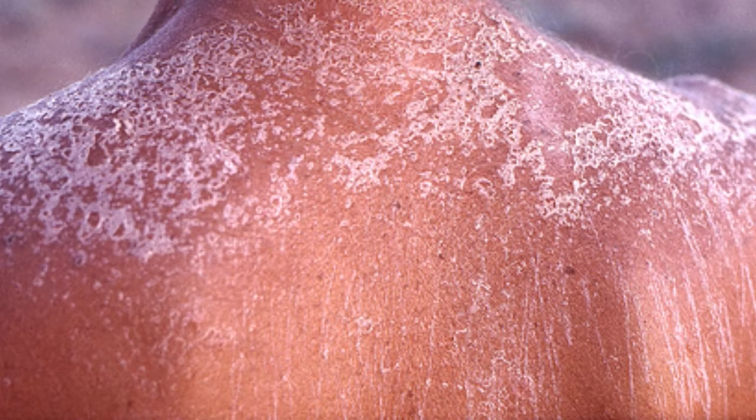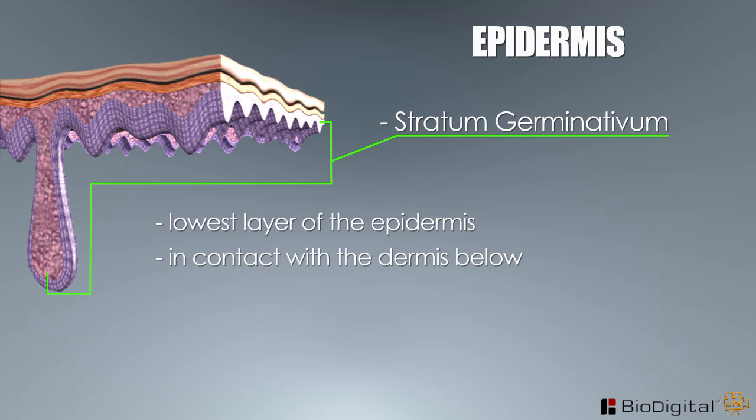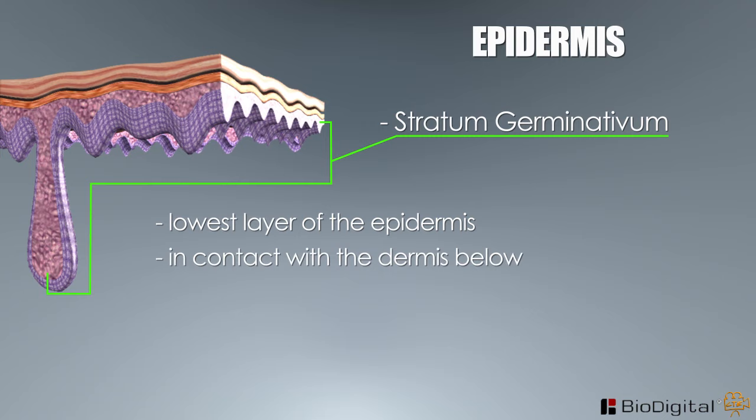Stratum germinativum. The stratum germinativum is the lowest layer of the epidermis and is in contact with the dermis below. It is the layer in which cell division called mitosis takes place and where new epidermal tissue is formed and begins to migrate to the surface of the skin, replacing the dead skin cells found in the stratum corneum.